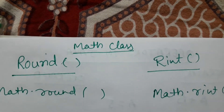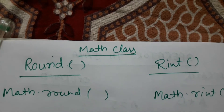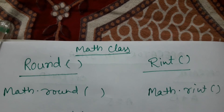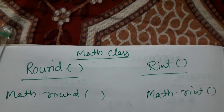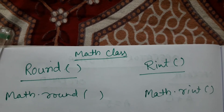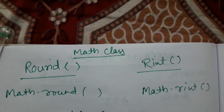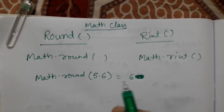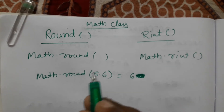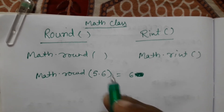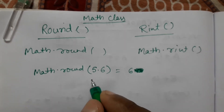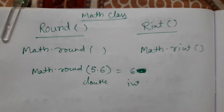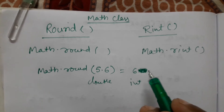Today we will learn two important functions under the Math library class: Math.rint and Math.round. First, we will discuss the round function. Using round function, we can round up a value. For example, Math.round(5.6) will give 6. The input is a double value, but the return type is int — so it will always be 6, not 6.0.